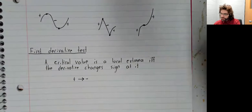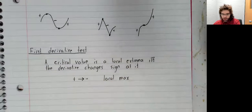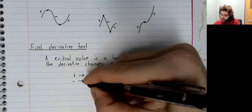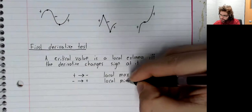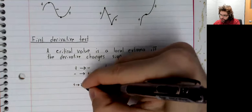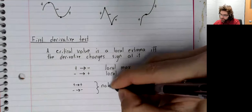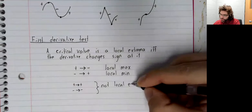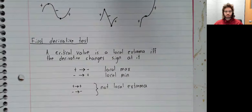If the derivative goes from positive to negative at a critical value, it's a local max. If it goes from negative to positive, it's a local min. And if it doesn't change sign, it's not a local extrema. We'll do examples of the first derivative test as their own video.